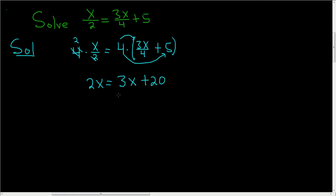To finish, we'll subtract 3x from both sides. So 2x minus 3x is negative x, and that's equal to 20.